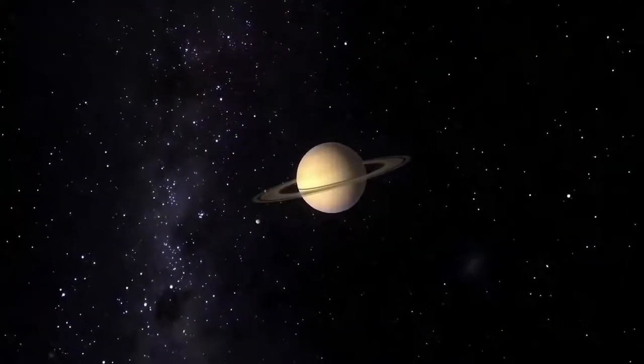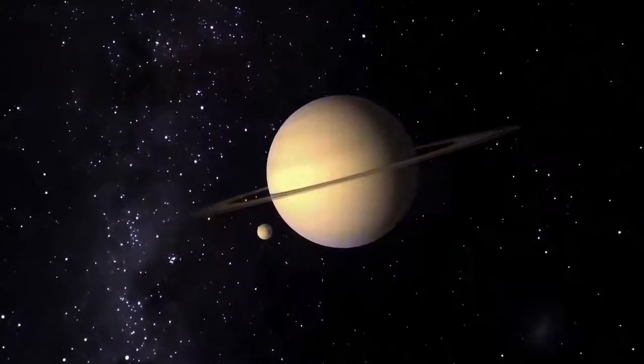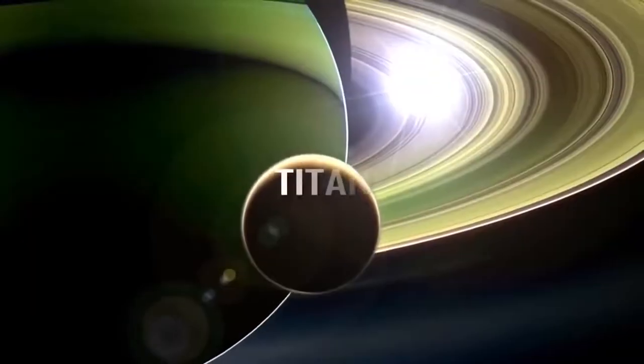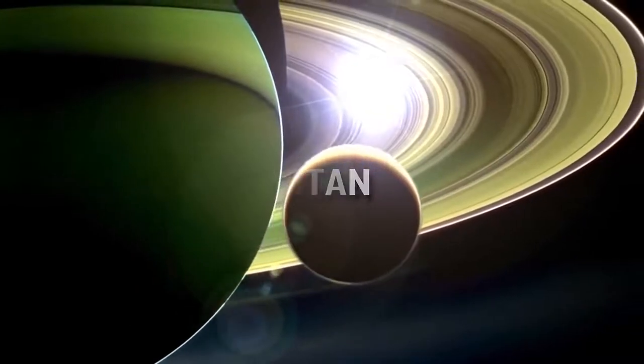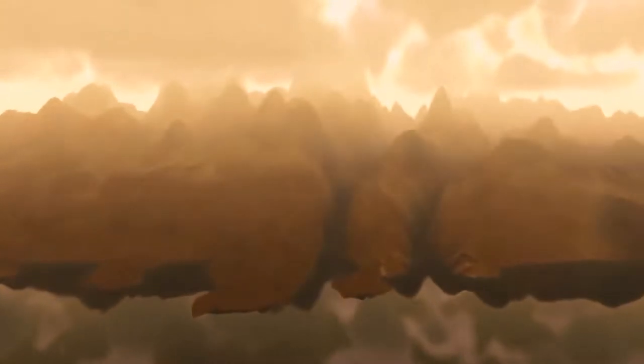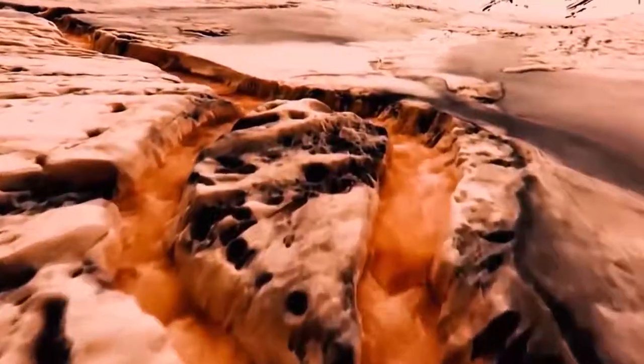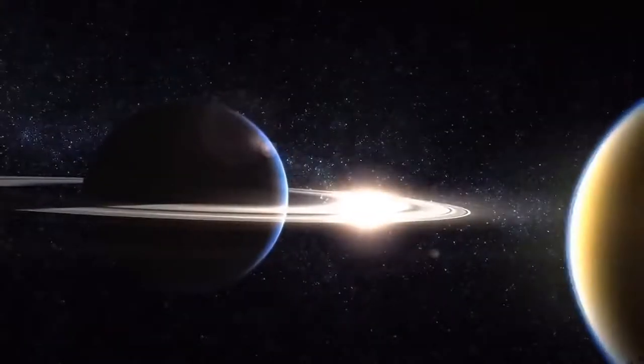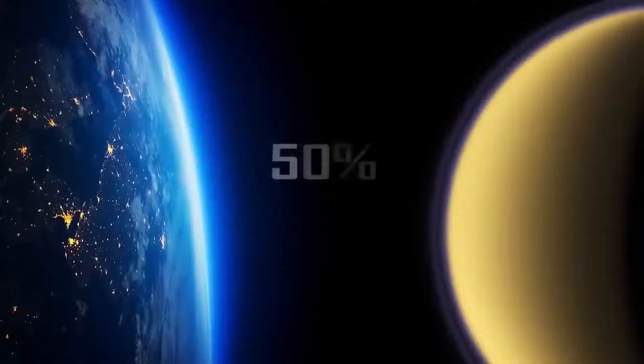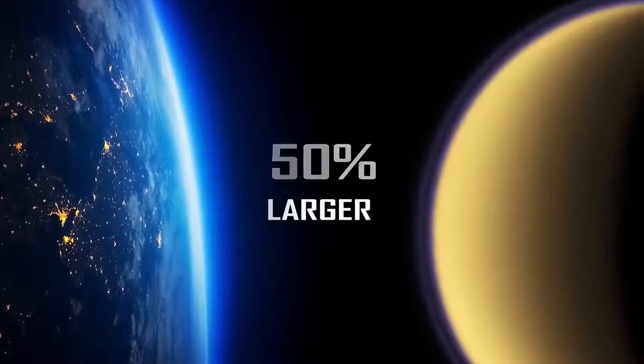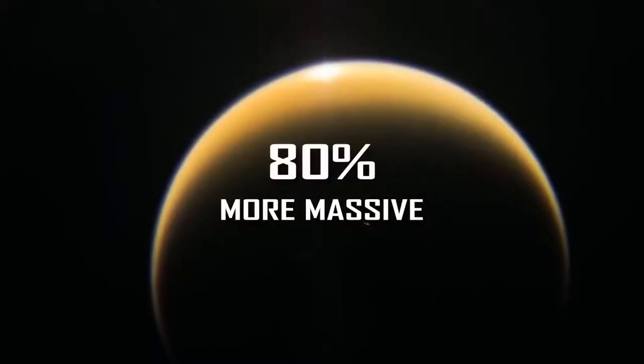The second largest moon to Saturn and the second largest natural satellite in the solar system is Titan. It's the only other known body in space other than planet Earth where there is clear evidence of stable bodies of liquid. And usually, where there is liquid water, there could be life. Titan is a planet-like moon that is 50% larger than our Earth's moon and is 80% more massive.